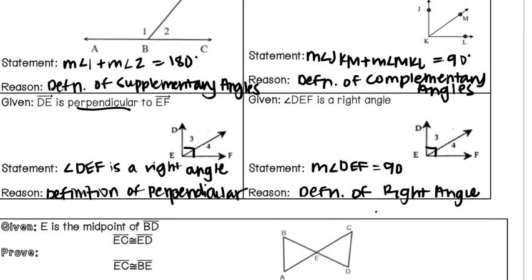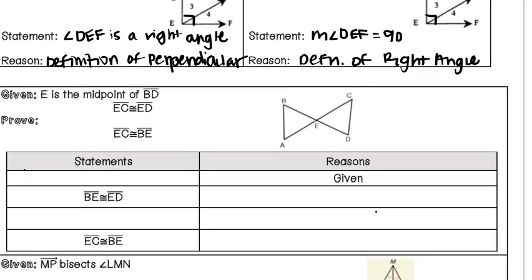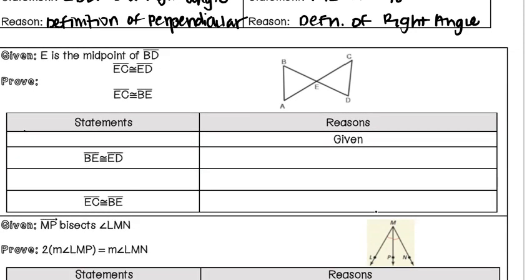Now let's practice some two-column proofs with statements and reasons. We may use some of those angle properties later. In our first proof, we're starting with midpoint practice. It says E is the midpoint of segment BD. If E is the midpoint of BD, remember BE and ED would have to be congruent. It also tells us that EC and ED are congruent.